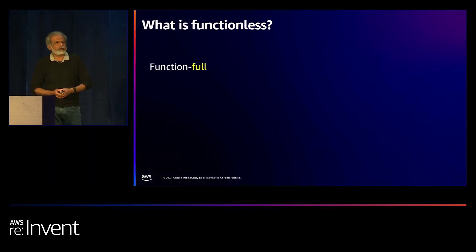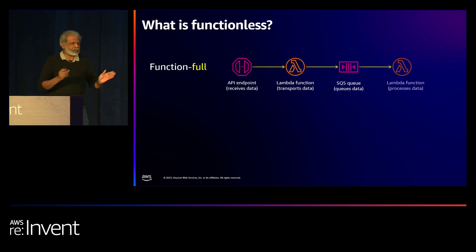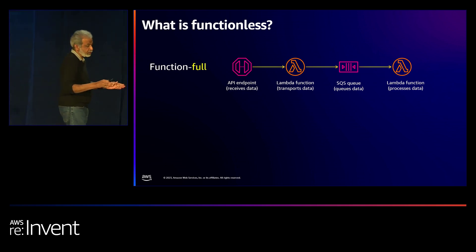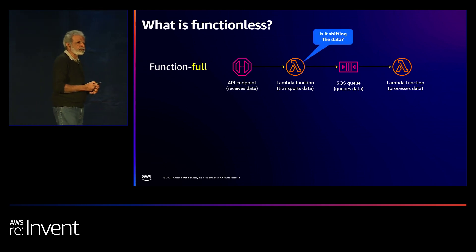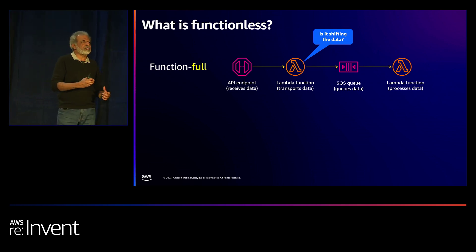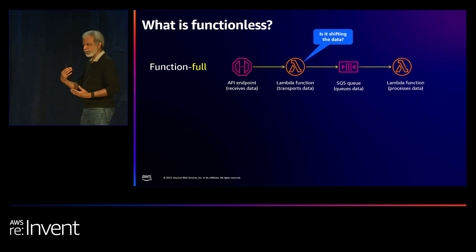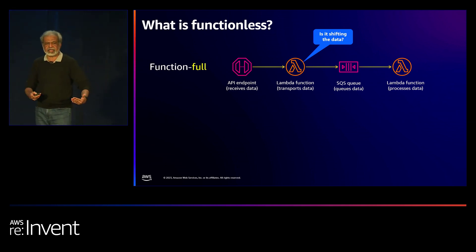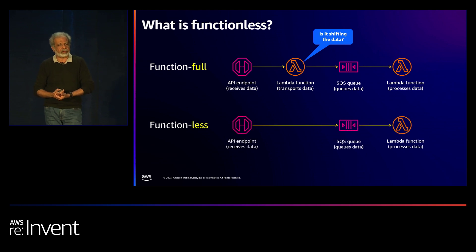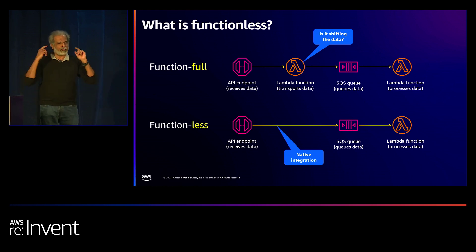To understand functionless, you need to understand functionful. If you look at a Lambda function, ask yourself: is it doing any business logic, or is it just shifting data from the API payload onto a queue? If it's just shifting data, that's not its strength — Lambda functions are for compute and logic. This is an area where you need to think: can I use native integrations to achieve the same thing? That's the starting point of functionless thinking.